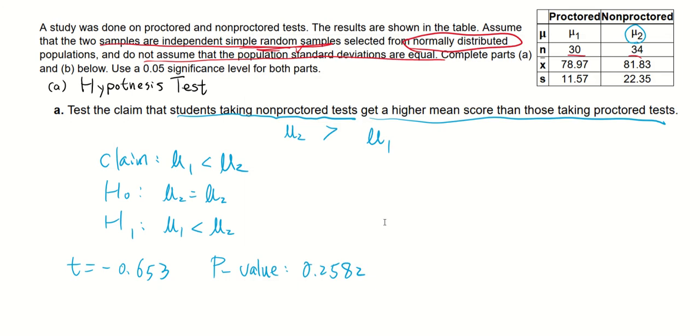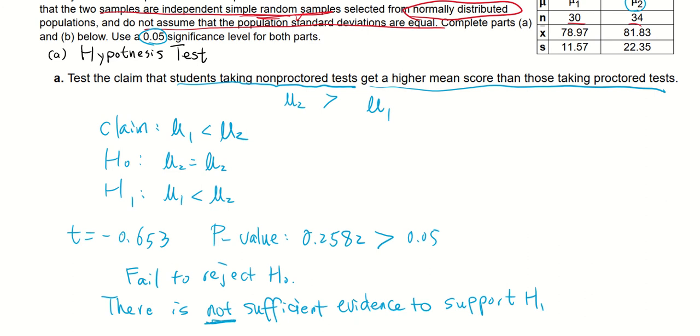Now that we have the p-value, we can compare with our alpha, which is 0.05. It's pretty obvious that our p-value is greater than the 0.05, which tells us our sample stats are not extreme enough for us to reject the null hypothesis. So we fail to reject the null hypothesis. And there is not sufficient evidence to support H1, which in this case is mu1 is less than mu2. Or you can say the student taking non-proctored tests getting a higher score than those taking proctored tests. We don't have sufficient evidence to support that claim. And that will be the conclusion for this hypothesis test.